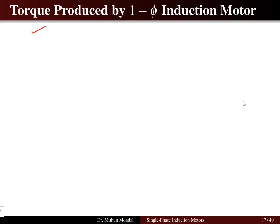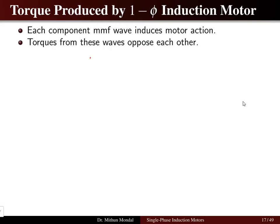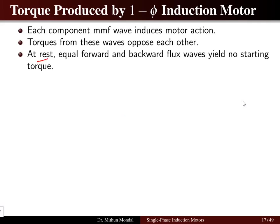Each component of the MMF wave induces motor action. There will be a forward MMF and a backward MMF, and both of them will induce motor action. The torques from these waves oppose each other — if the torque due to the forward MMF is in the positive y-direction, then the torque due to the backward MMF will be in the negative y-direction. At rest or standstill condition, equal forward and backward flux waves result in no starting torque. This is the limitation of the single-phase induction motor.